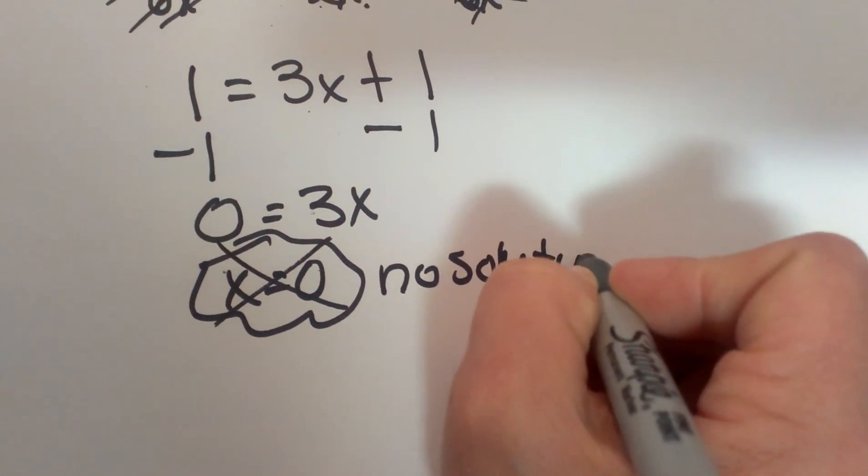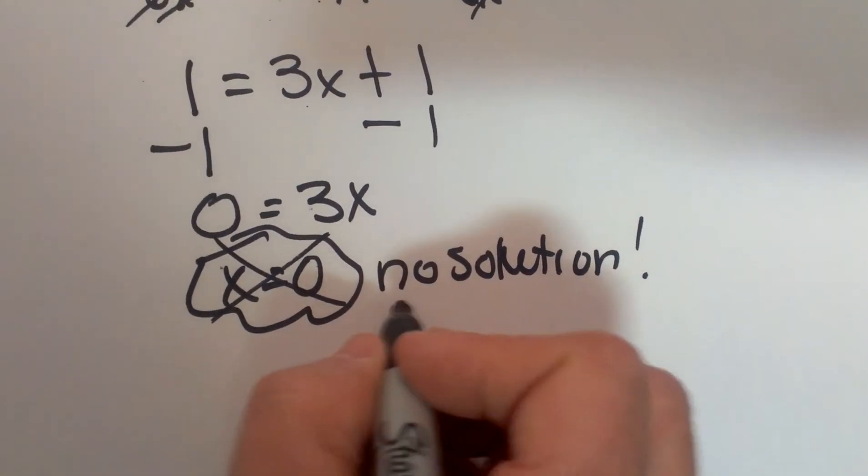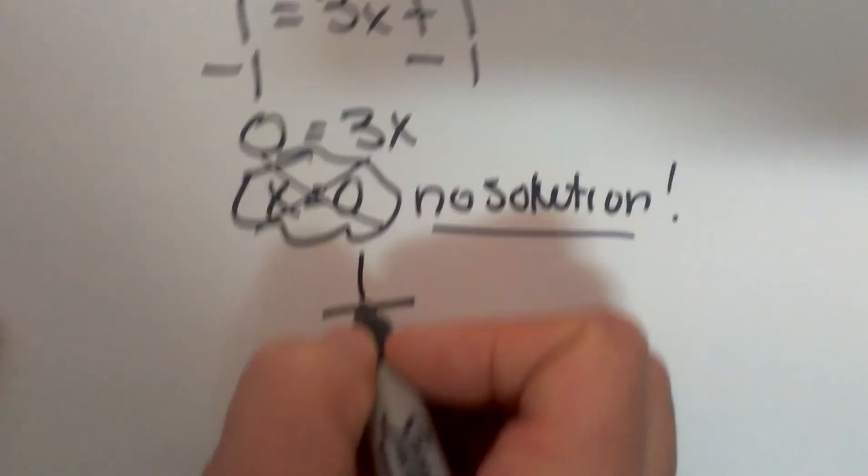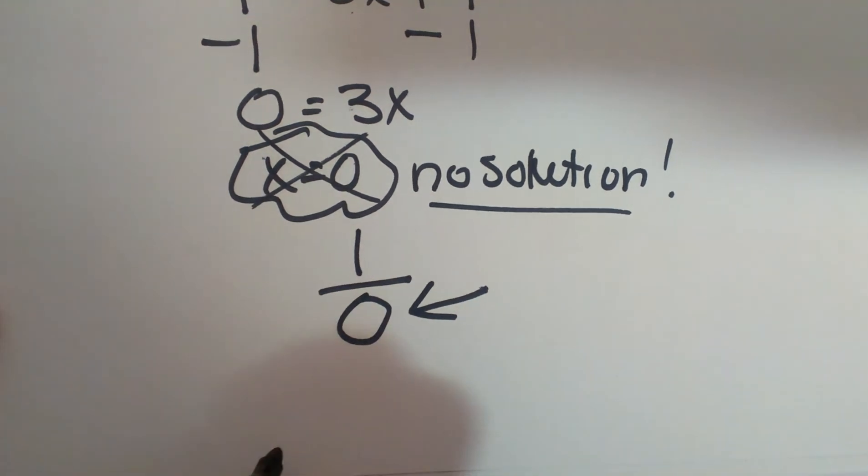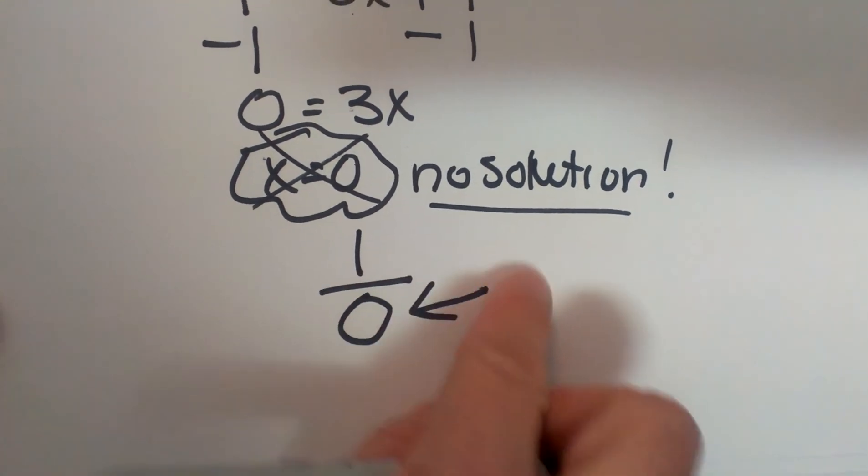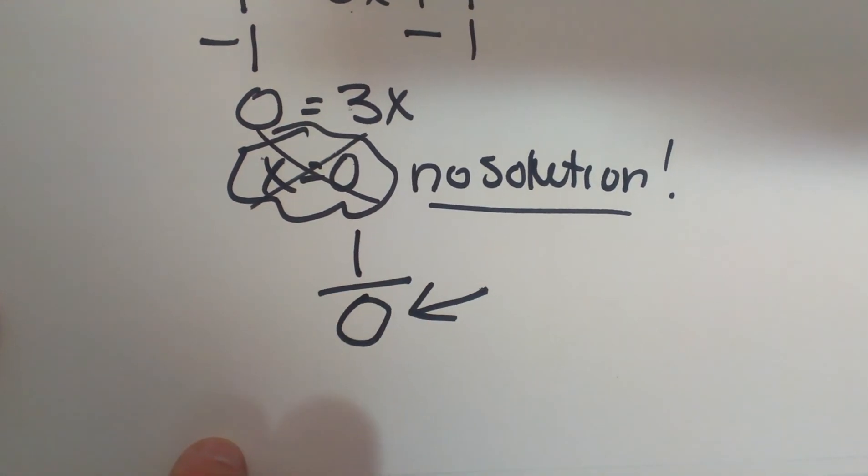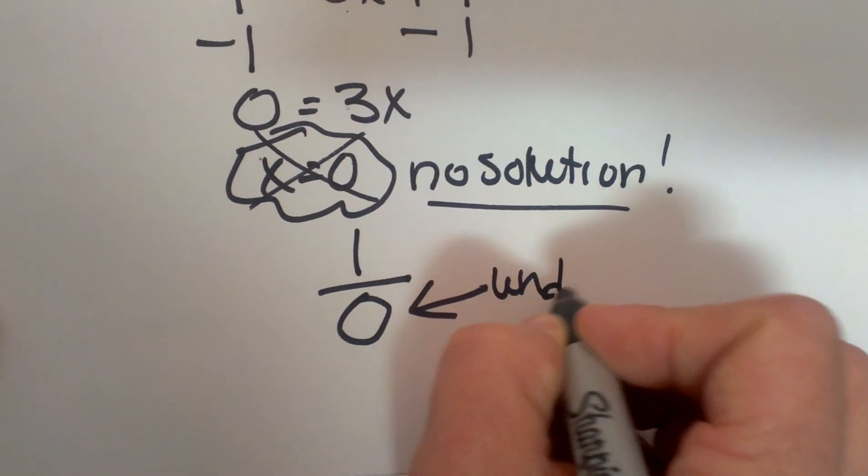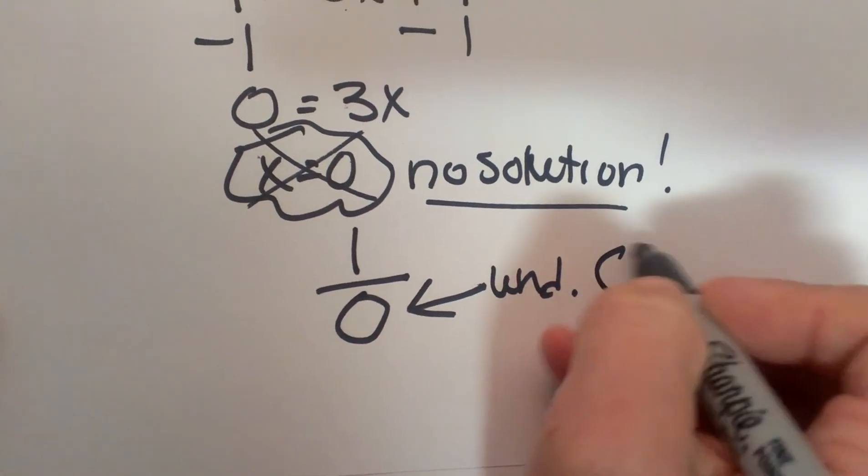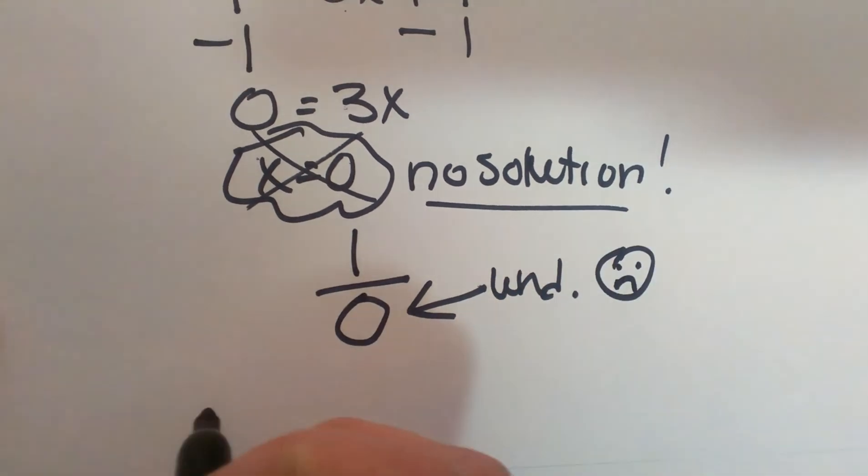So when do you have no solution? You have no solution if you have a 0 in the denominator. So you always have to check your rationals and make sure you don't end up with 0 in the denominator because that is undefined and what I consider a no-no in math.